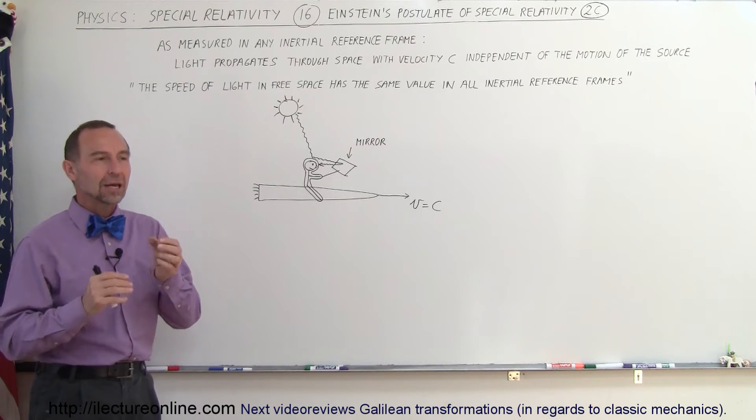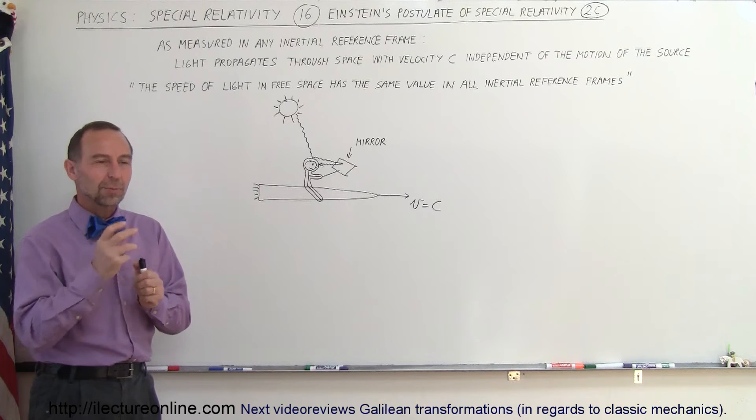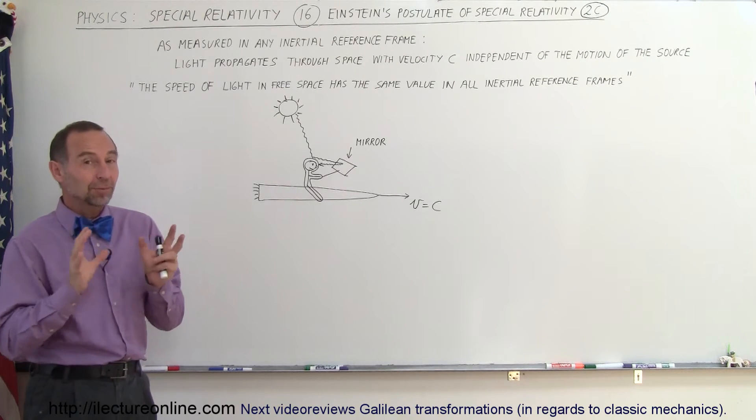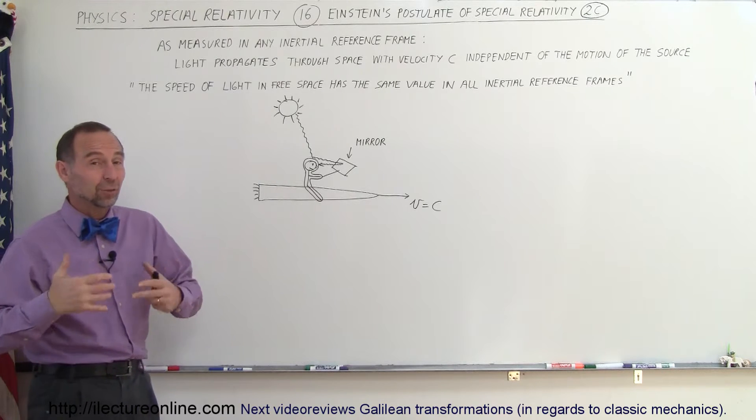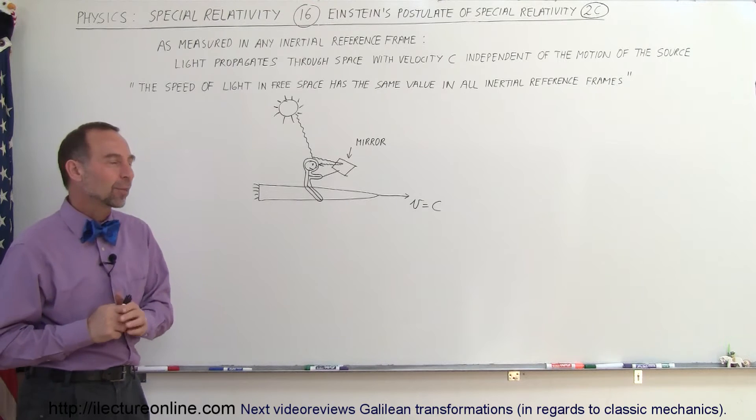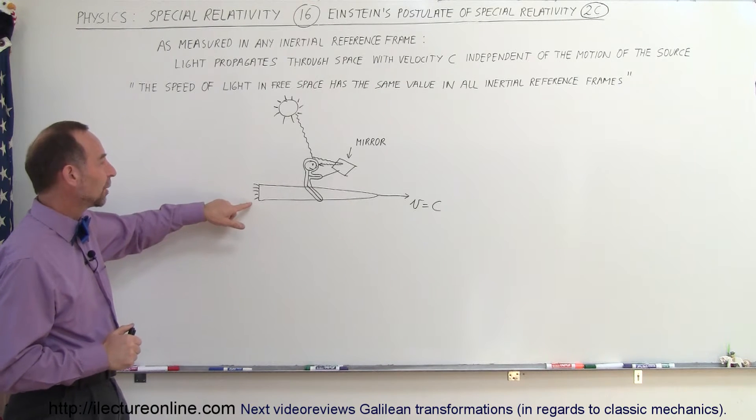Einstein had this canny ability to look at certain situations and come up with very strange and interesting thinking experiments. Experiments that couldn't really be held in real life because it would be impossible. But he said, what if we could do this? What would it be like? So he came up with this thought experiment.